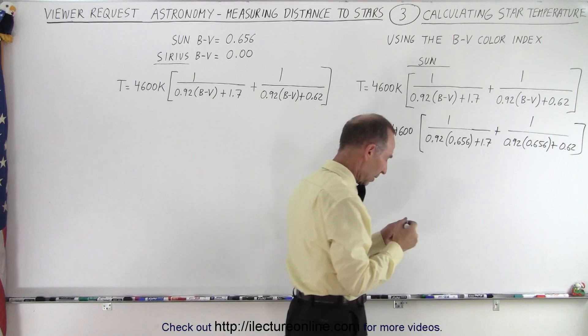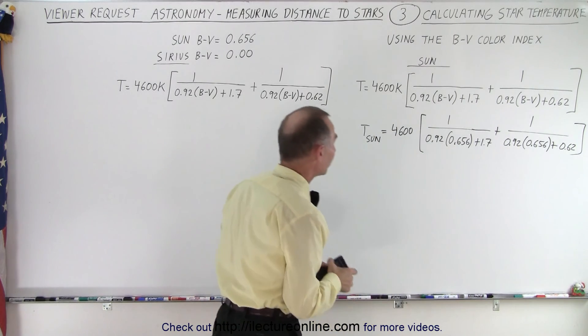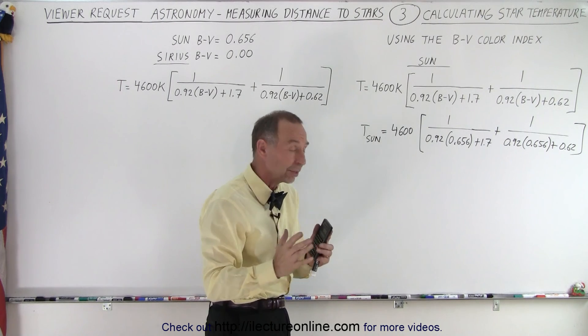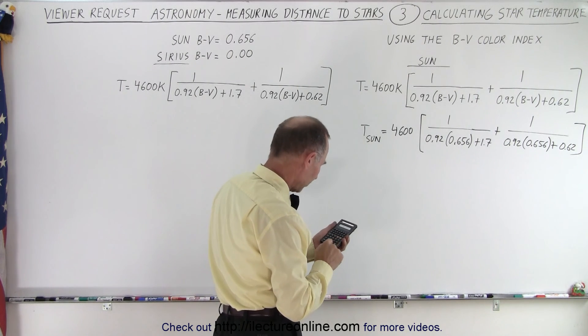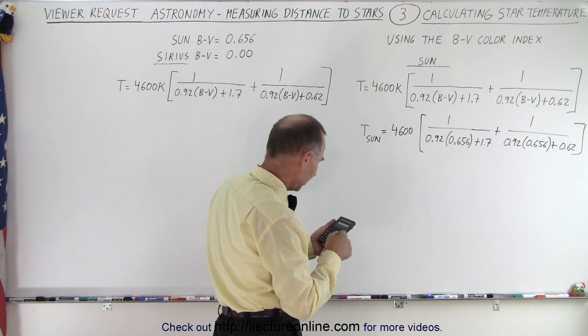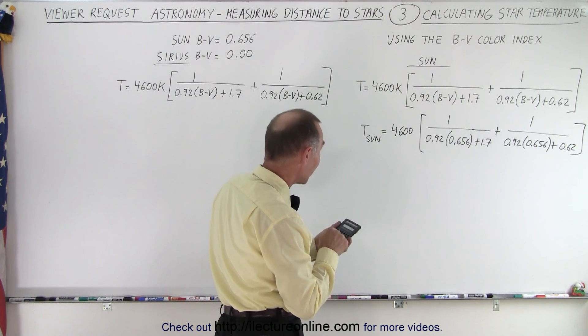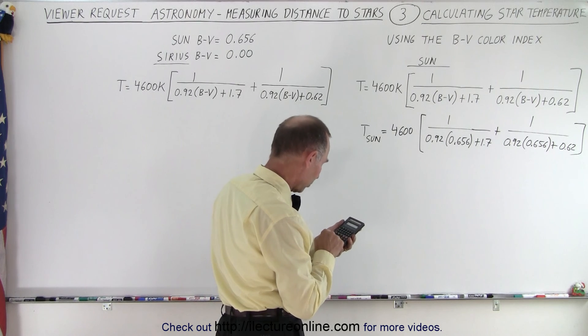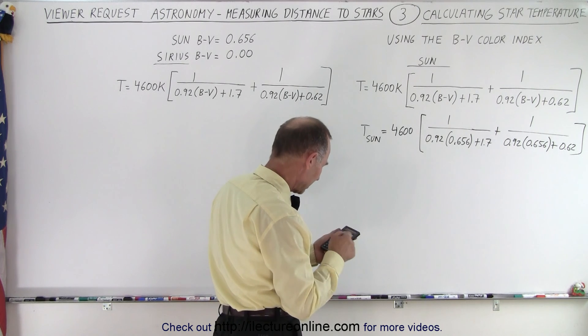All right, now we're going to need a calculator. Let's see what that's equal to. So for the first fraction I'm going to solve each fraction separately so we can see what it looks like. So we have 0.92 times 0.656 plus 1.7 and then we take the inverse of that.